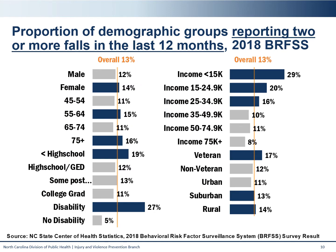Another source that we can use to study falls, in addition to our death, hospital, and ED data, is the Behavioral Risk Factor Surveillance System Survey. BRFSS is a survey of adults that is conducted to understand health behaviors and outcomes. BRFSS contains a question about falls within the last 12 months, and here we report these results for 2018 as a breakdown by demographic group. Overall, 13% of participants reported having two or more falls within the last 12 months.